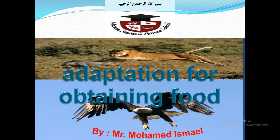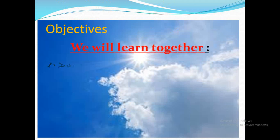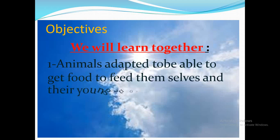Today, inshallah, we will continue speaking about adaptation for obtaining food. Our objectives today: we will learn together that animals adapted to be able to get food, to feed themselves and their young in order to survive. All animals need to survive, so they adapt to the environment and find ways to feed themselves, like hunting and getting prey.